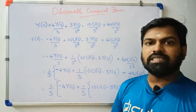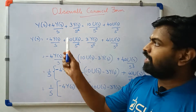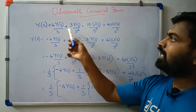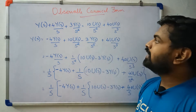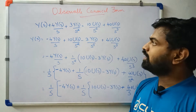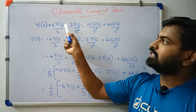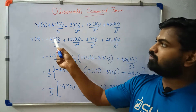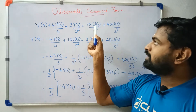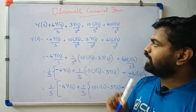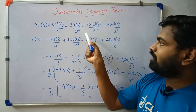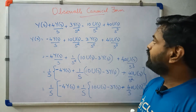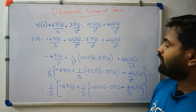Let's look at the next step. We collect the terms of Y(s): it equals 10 U(s) over s squared plus 40 U(s) over s cubed.